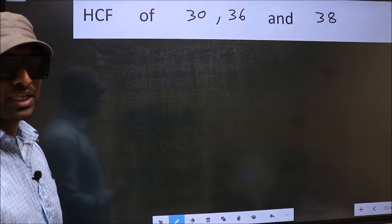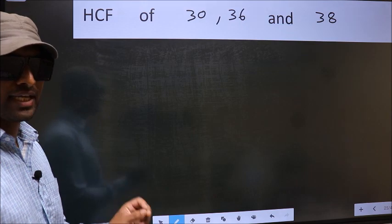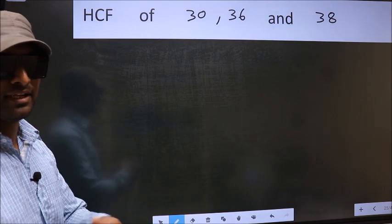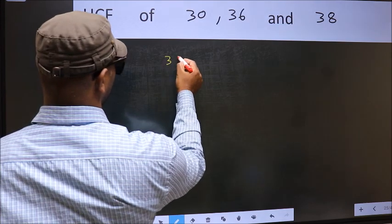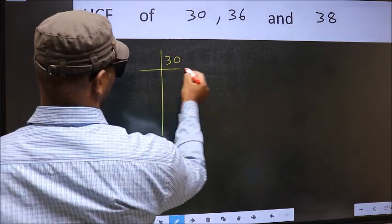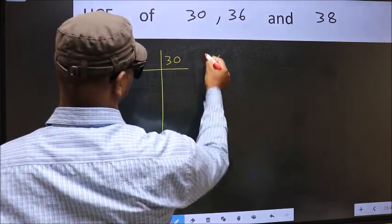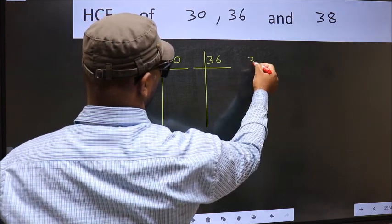For that we should do the prime factorization of each number separately. What I mean is 30, 36, 38.